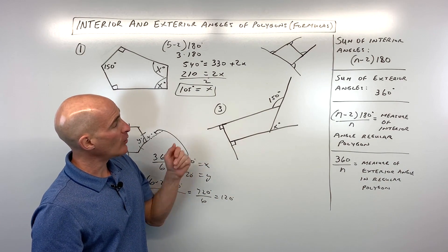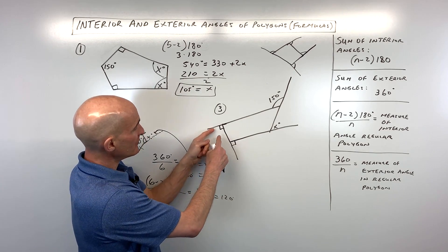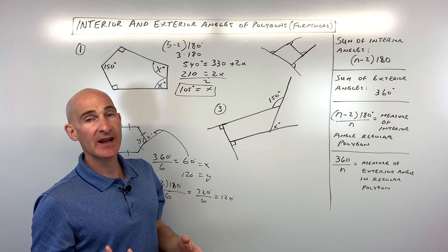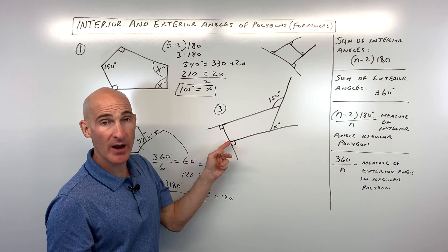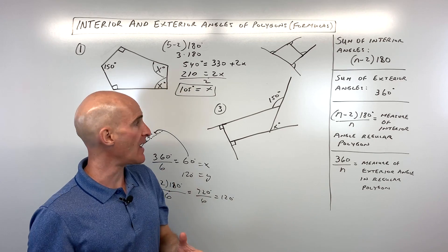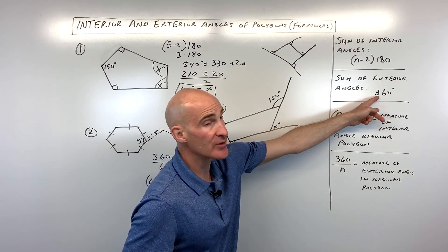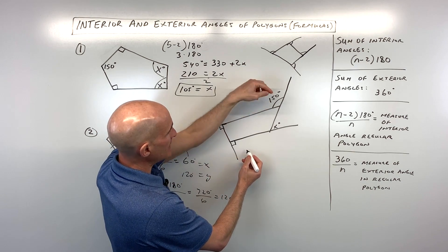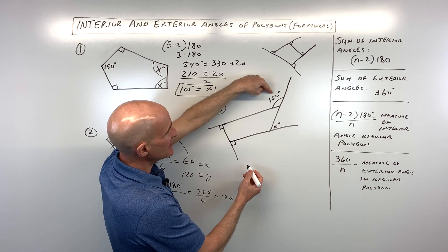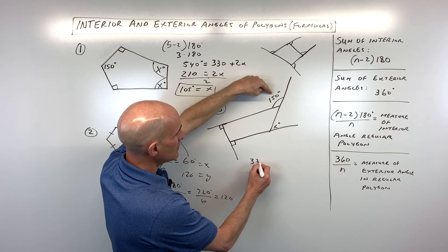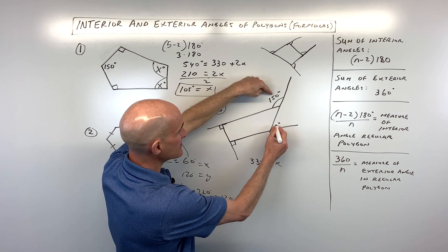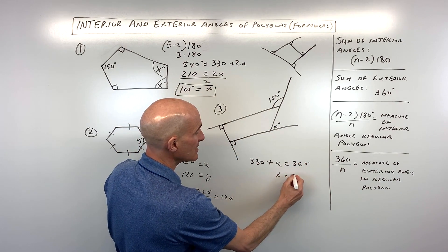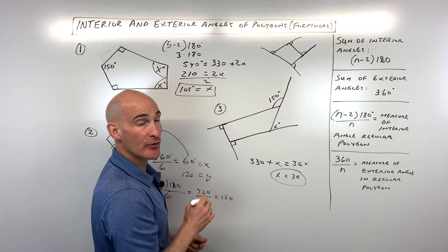For number 3, we're given the exterior angles of a polygon that is not regular — all sides and angles are not the same — but the exterior angles still always add up to 360. So: 90 + 90 + 150 + x = 360. That simplifies to 330 + x = 360, so subtracting 330 from both sides gives x = 30 degrees.